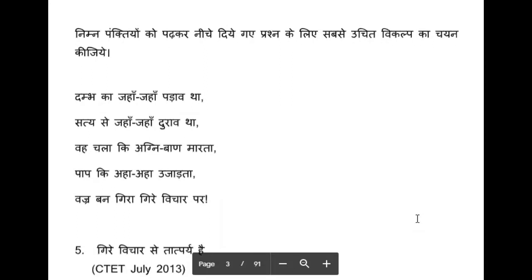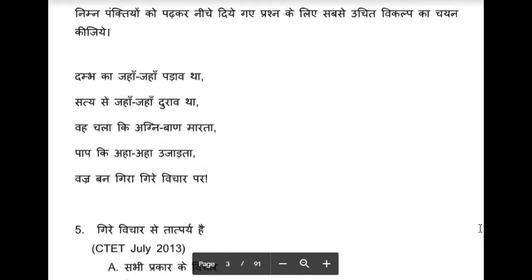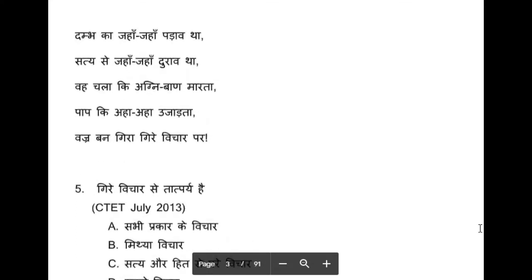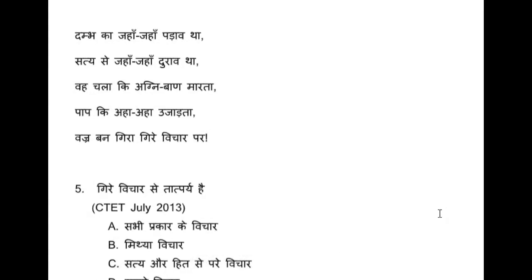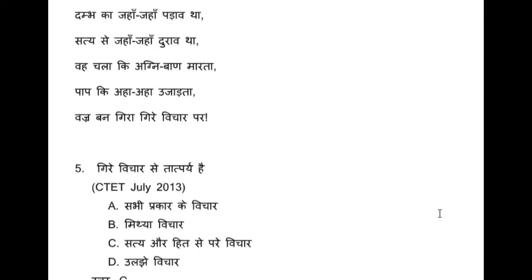The kavita lines are: dambh ka jahaan jahaan padhav tha / satya se jahaan jahaan dhuraav tha / veh chala ki agni baan maarta / paap ki ahaha ujara ta / braj vajrubaan gira gire vichar par. This is a little hard in the exam because you are going to be a teacher and you have to teach children — so the questions are given accordingly. Read it carefully and pay attention to what question has come. 'Gire vichar se kya taatpari hai' — this whole paragraph is from CTET July 2013. You can get an idea of what level of question comes. The four options are: sabhi prakar ke vichar / mithya vichar / satya aur hit se pari vichar / ulji vichar. Looking at the lines — vajrubaan gira gire vichar par — the second line says satya se jahaan jahaan dhuraav tha, meaning satya aur hit se pari vichar — those are deviant thoughts. So gire vichar means satya aur hit se pari vichar.